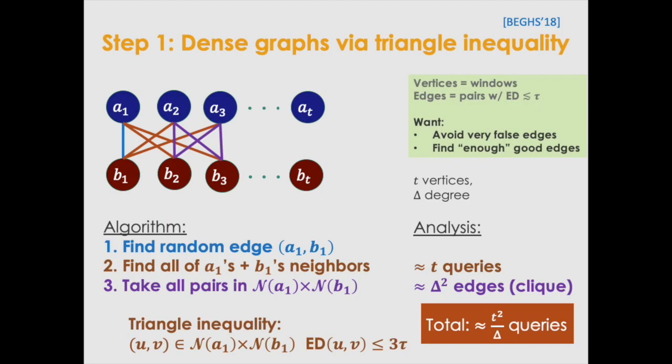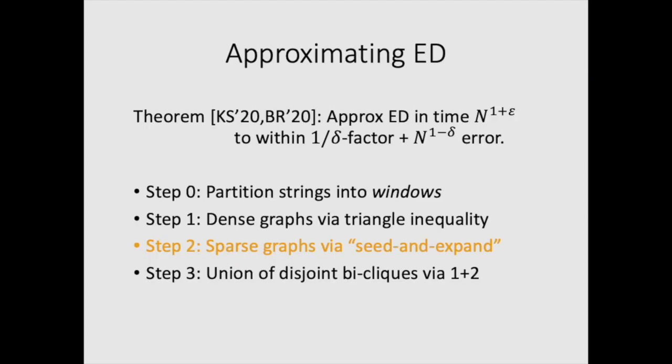Step one was the contribution of the quantum edit distance paper BGHS, as they were able to use this query algorithm to save time when delta is large, and then they were able to use Grover's search to save time when delta is small. Since we would like such a result for classical computers, we now introduce step two from CDGKS.